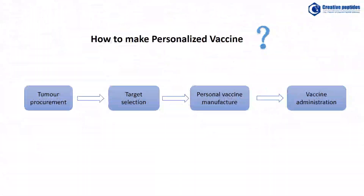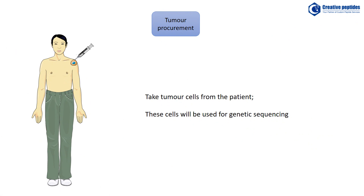How to make a personalized vaccine? The first step is tumor procurement: take tumor cells from the patient. These cells will be used for genetic sequencing. The second step is target selection.